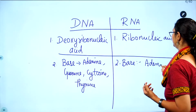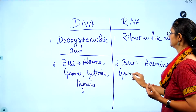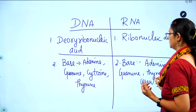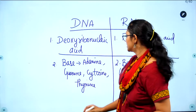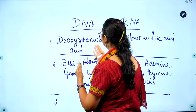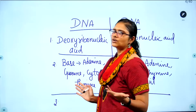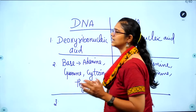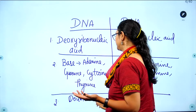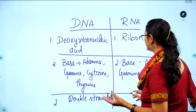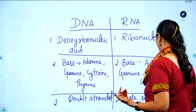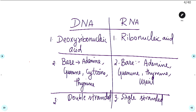The bases present in RNA are: adenine, guanine, cytosine, and uracil — uracil replaces thymine in RNA. In both DNA and RNA, phosphoric acid is common, and the linkage is also common — it is phosphodiester linkage. DNA is double-stranded, while RNA is single-stranded, though double-stranded RNA can also be present.